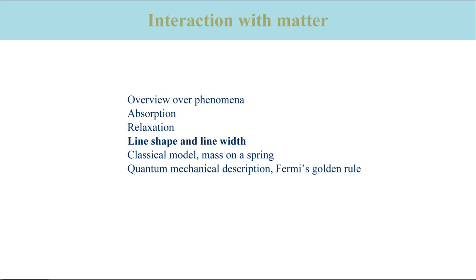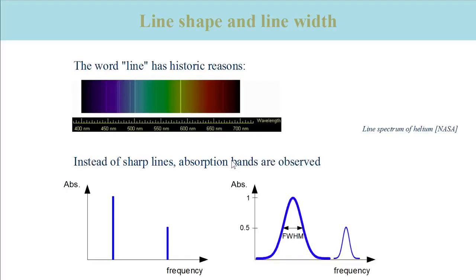We will now learn what influences the shape of an absorption spectrum. The important terms here are line shape and line width. These words are used to describe the shape of an absorption band and its width.